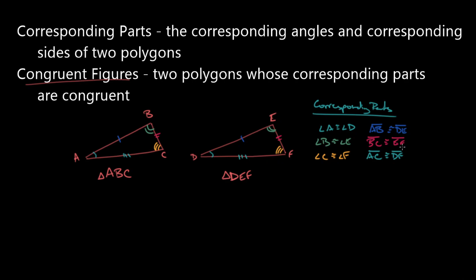If I do have all these corresponding parts congruent, what I can write is what's called a congruence statement. In this case, triangle ABC is congruent to triangle DEF. This is a statement of congruence for these two polygons — specifically triangles.